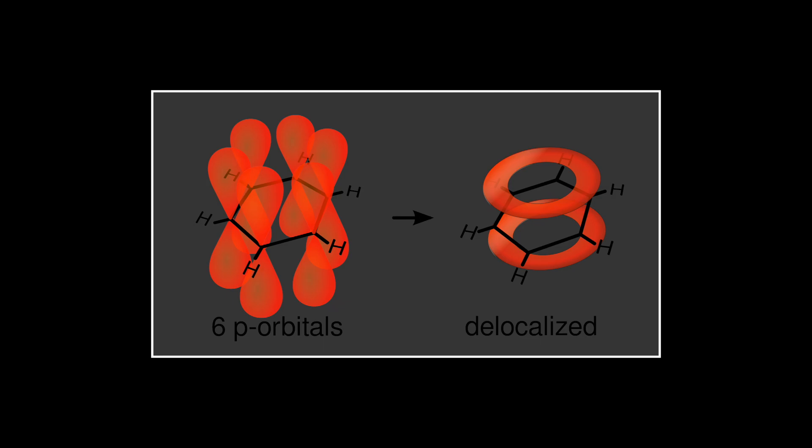The specifics of how this works are not relevant for now, but it is important to know that resonance structures are generally indicative of stability, as the more spread out these electrons are, the less they will repel each other. Again, remember that this is an abridged and incomplete explanation. If you want to learn more about these topics, I will have some resources linked in the description.